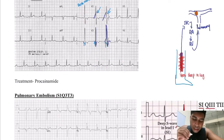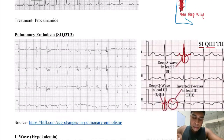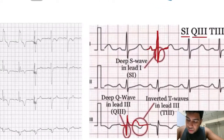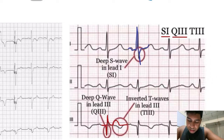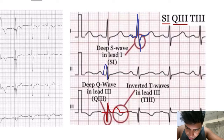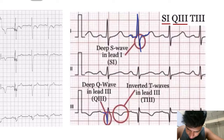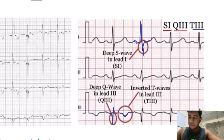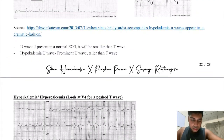The treatment for Wolf-Parkinson-White is procainamide. Next, pulmonary embolism: the ECG changes are S1, Q3, and T3. S1 means the S wave in lead one will be deep; Q3 means a deep Q wave in lead three — you can see the deep Q wave here; and T3 means inverted T waves in lead three, so instead of going the same direction as the R wave, the T wave is inverted.